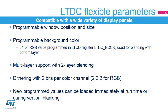Multi-layer support with blending supports two layers. Dithering uses two bits per color channel — 2-2-2 for RGB. The dithering pseudo-random technique adds a small random value or threshold to each pixel color channel or RGB value, rounding up the most significant bits in some cases when displaying 24-bit data on an 18-bit display.